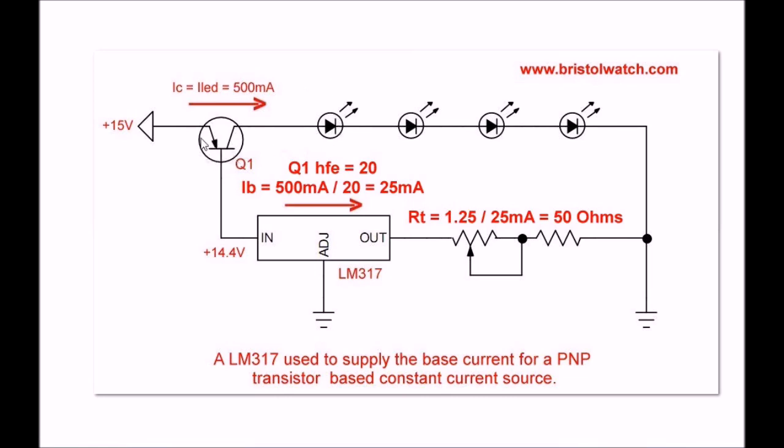For arguments sake, here's Q1. This is a PNP transistor. I'm going to argue for this discussion that Q1 has an HFE of 20. That's the DC gain. I'm going to assume that through my string of LEDs that I'm sending 500 milliamps. So the collector current of Q1 is the same thing as the current through the string of LEDs. We set that at 500 milliamps.